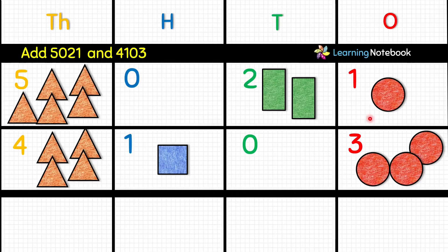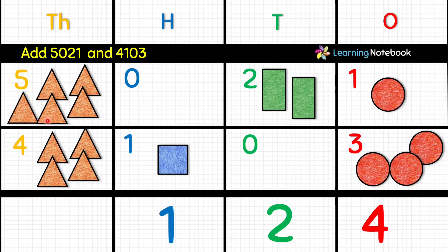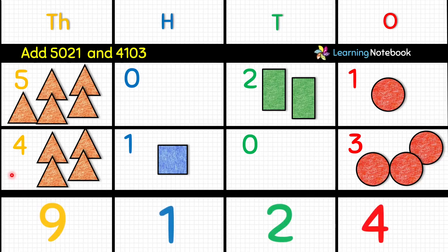Now let's add the ones place — count the red circles: 3 plus 1 equals 4. Next, count the green rectangles: only 2, so write 2. At the hundreds place there is only 1 blue square, so write 1. Now add the thousands place — count the triangles: 5, 6, 7, 8, 9. So write 9. Our answer is 9124.